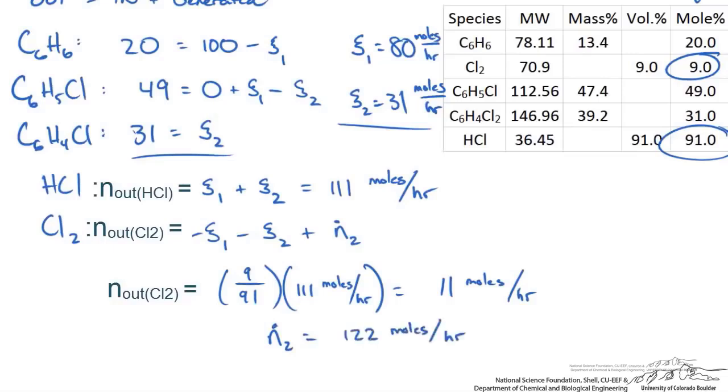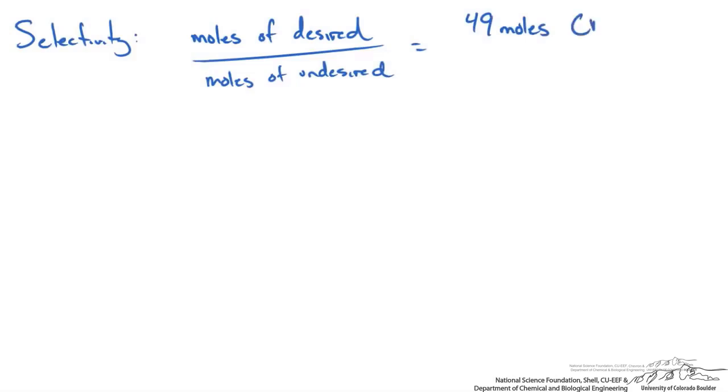We wanted the selectivity and the volume of the gas produced. Selectivity in our liquid stream is just the moles of our desired product over the moles of our undesired product. If we go back to our composition, this was 49 moles of our chlorobenzene over 31 moles of our dichlorobenzene. This gives us a selectivity of about 1.6.